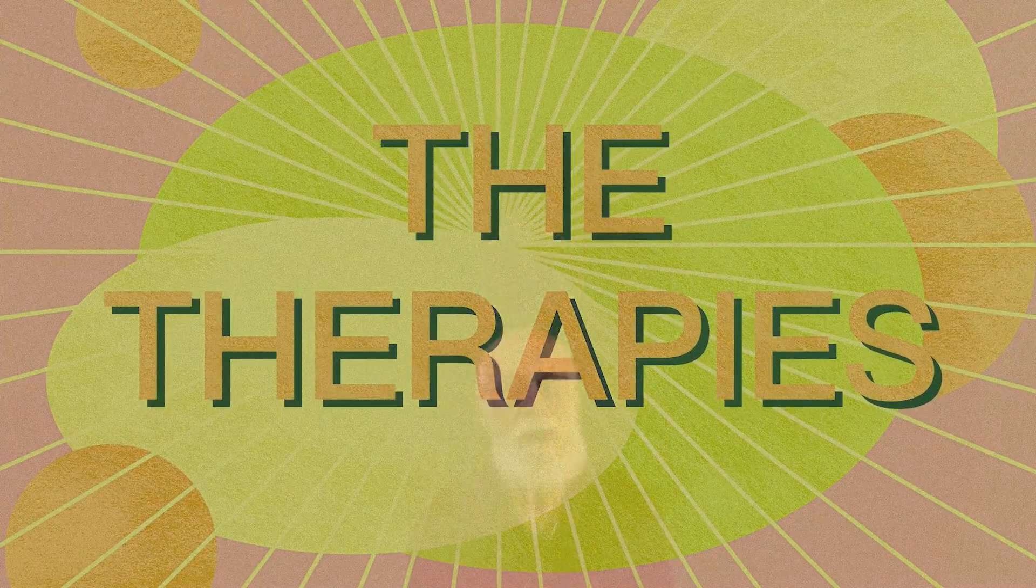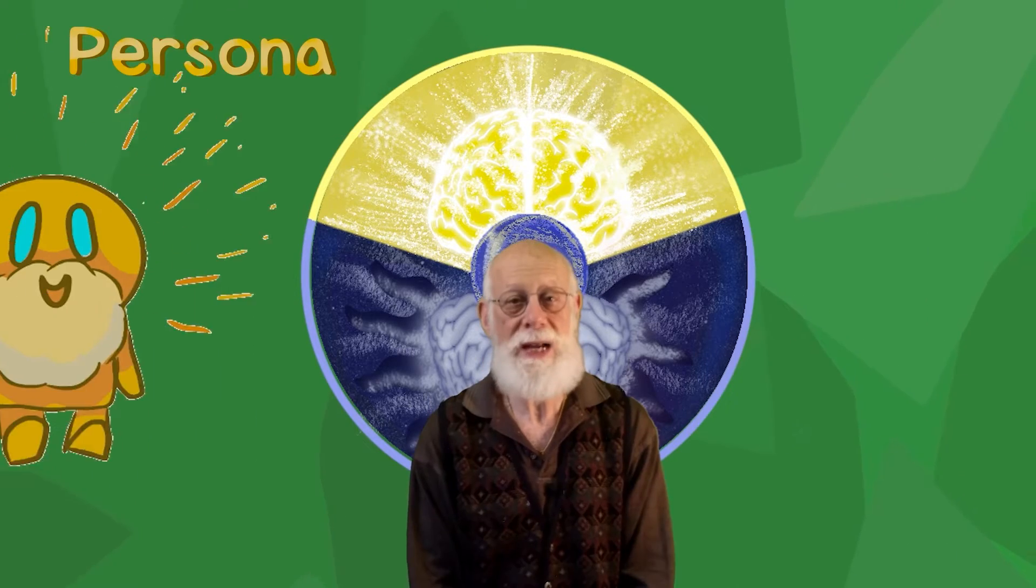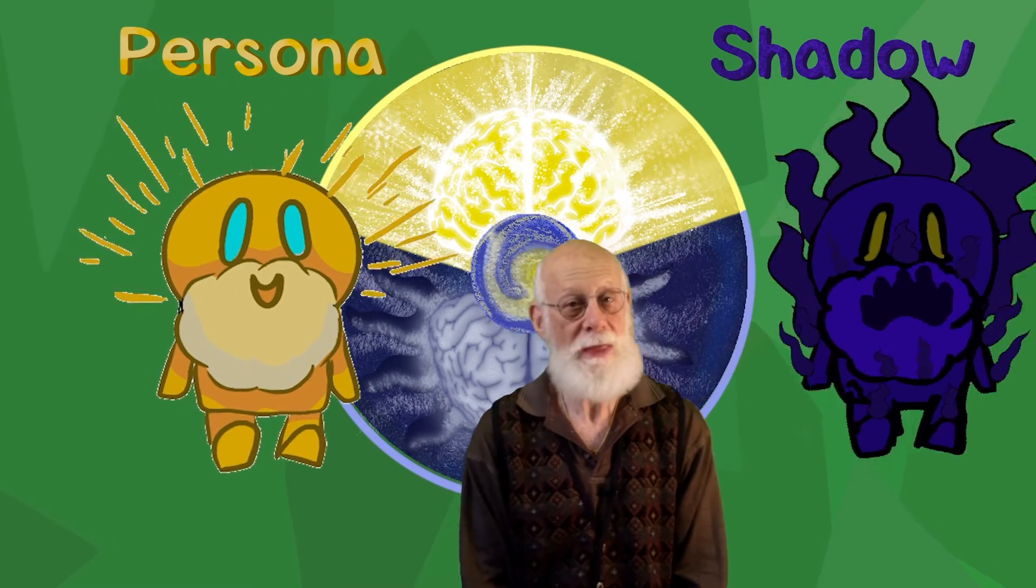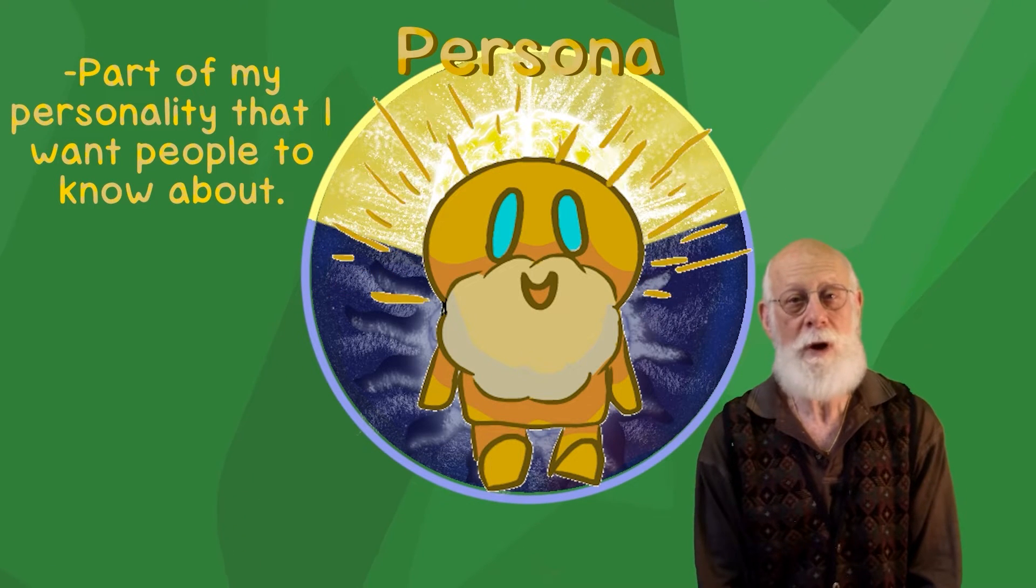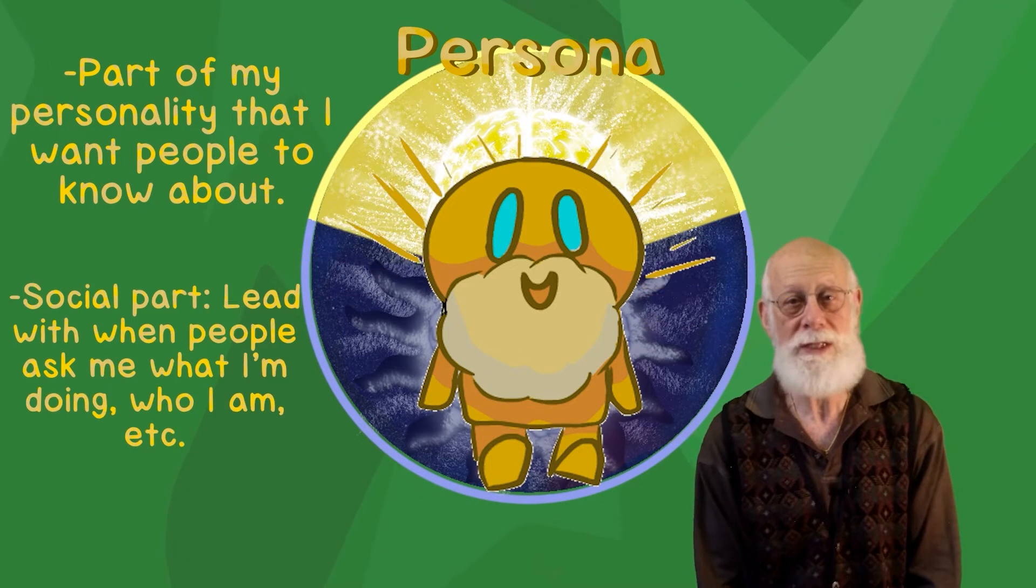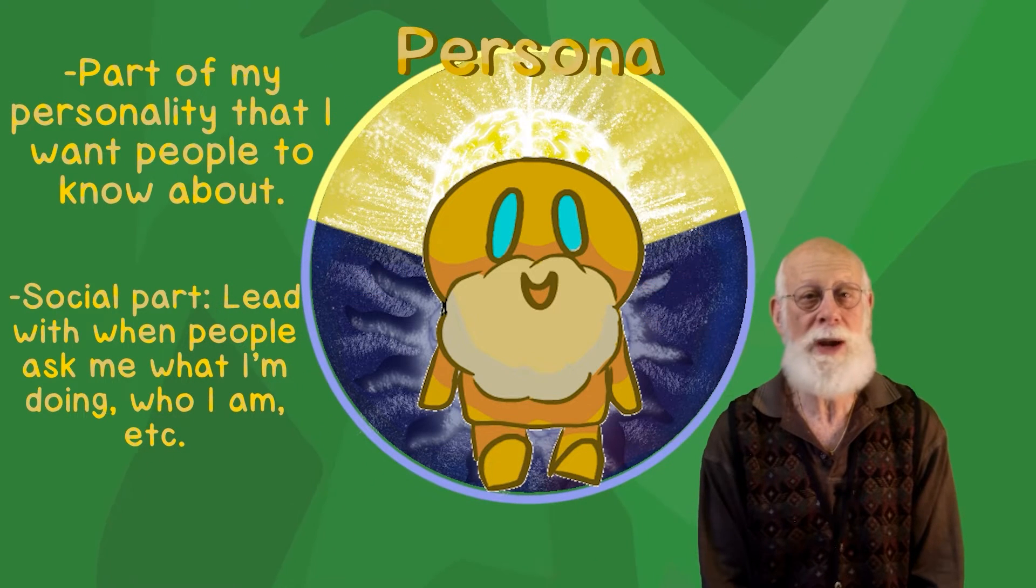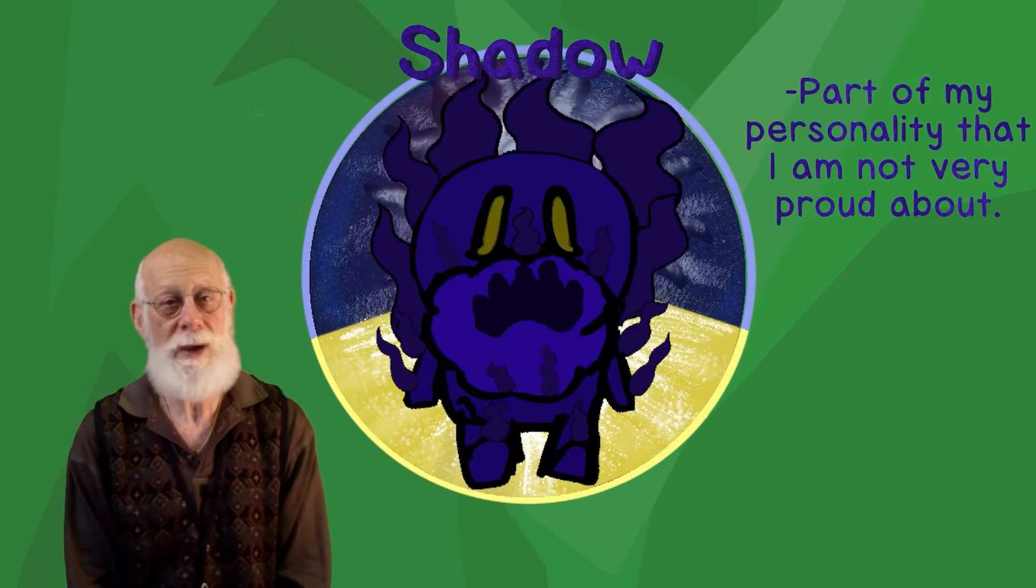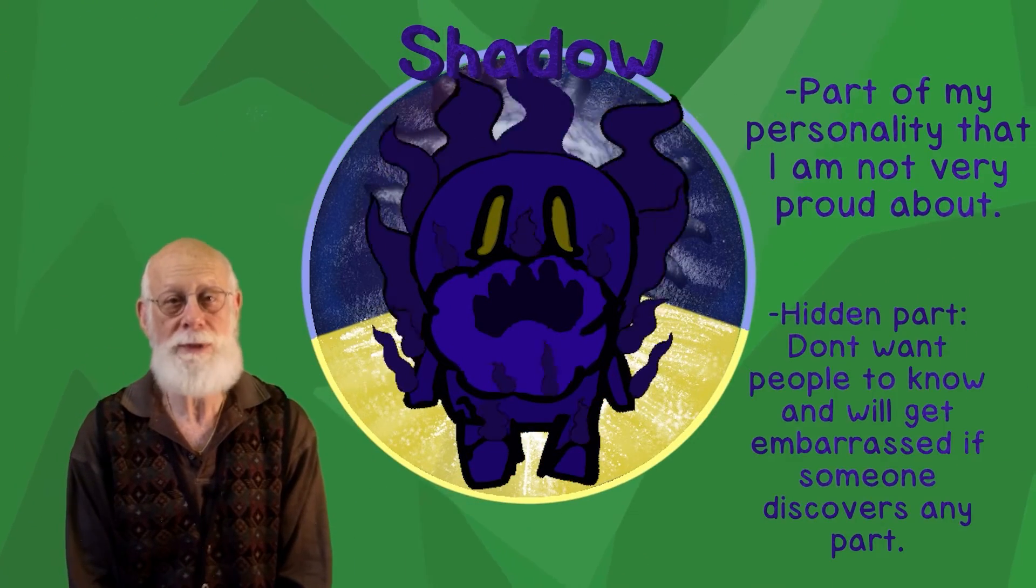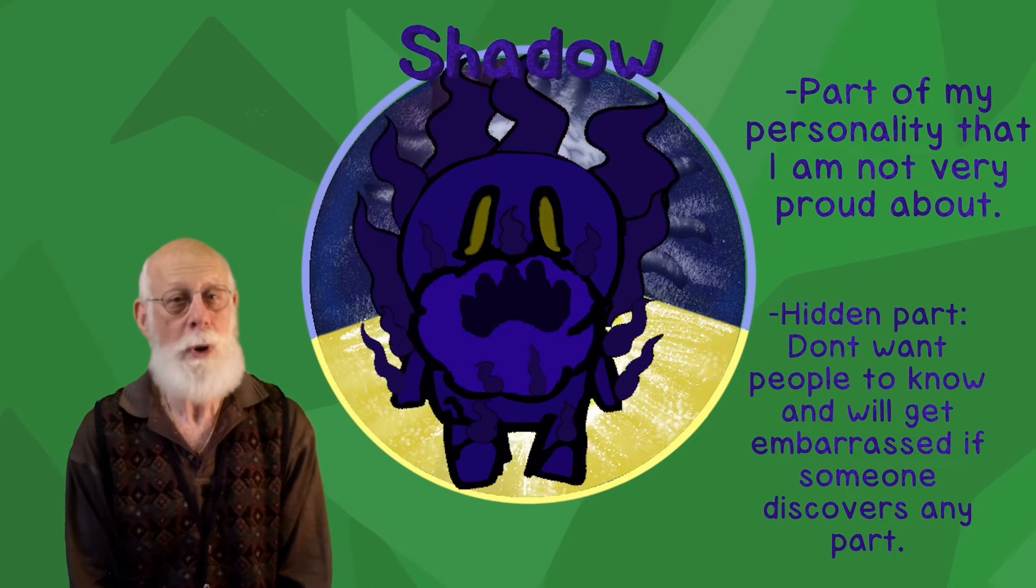We're looking at the therapies. The first type of therapy is looking at the ego. Our ego is made up of two parts, a persona and a shadow. And the persona is the part of my ego, the part of my personality, the part of myself that I want people to know about. The shadow is the part that I'm not really proud about, and I particularly don't want people to know the shadow.